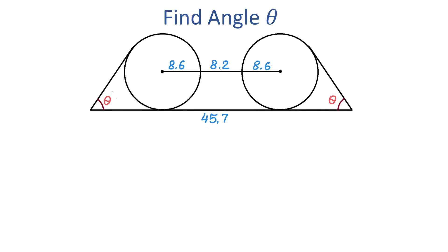In this figure, we have two identical circles and two angles that have exactly the same measure. We are given the radius of each circle, which is 8.6 units, the distance between the circles is 8.2 units, and the total horizontal distance is 45.7 units. We need to find angle theta.